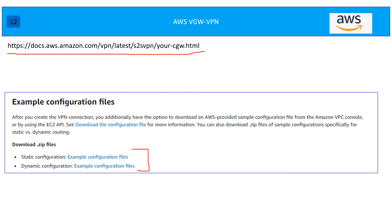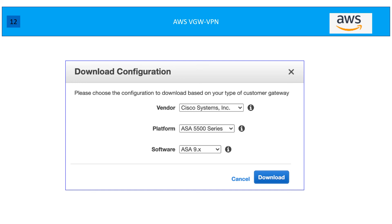You can go to the link provided, which gives sample configurations for your remote end. For static or dynamic configuration, there are sample files for different vendors. When you create the VPG in your real environment, you can choose a vendor and generate the configuration file based on those samples, giving you a ready-made configuration for your remote end. Under the VPN connection, once created, you can also specify the remote vendor, platform, and software version, then download the configuration file.